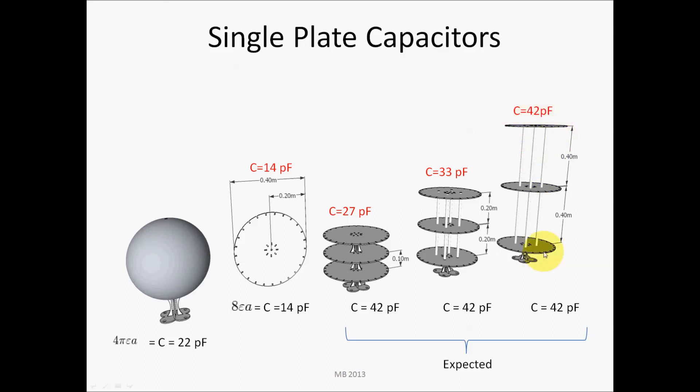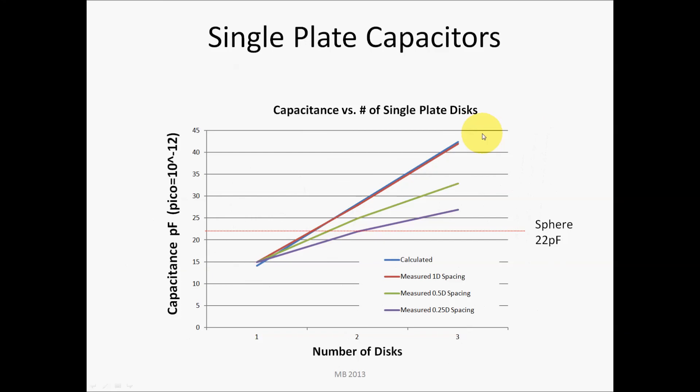But I had to achieve this by spacing the plates farther and farther, so I thought that was kind of interesting. I have here the measurement curve—this would be the number of discs and this would be the capacitance value. And this is sort of what I calculated, not anticipating the proximity of the discs to each other.